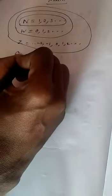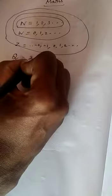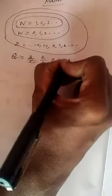Hi everyone. Natural number N equals 1, 2, 3 and so on. Whole number W equals 0, 1, 2 and so on. Whole number and integers Z equals minus 2, minus 1, 0, 1, 2 and so on. And rational number Q equals 3/5, 2/9, 0.50, and 4.